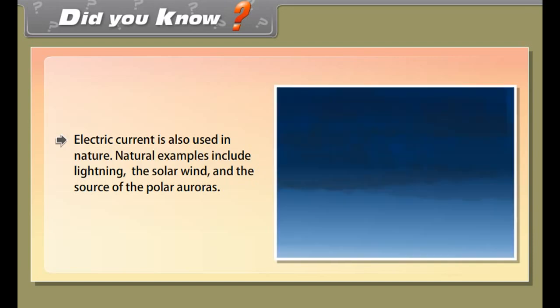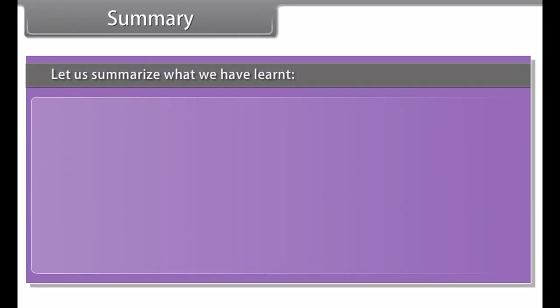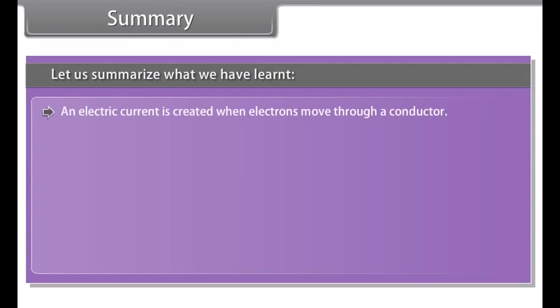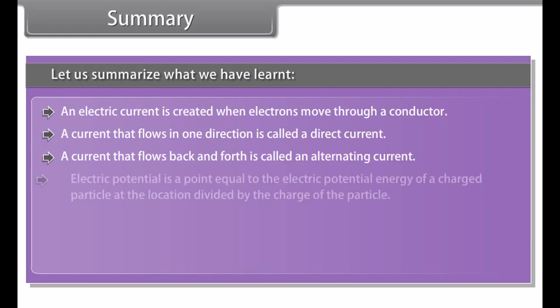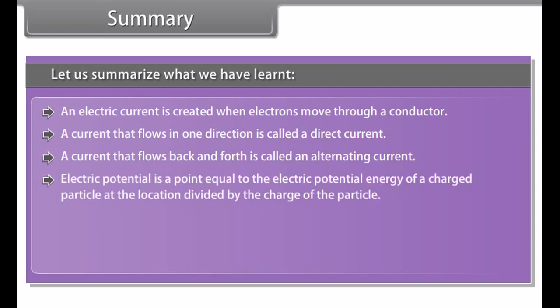The heating effect of electric current is applied in many appliances, including electric immersion water heaters and electric iron boxes. A good heating element has high resistivity and a high melting point. An electric fuse is an example of the heating effect of electric current — a fuse rated 3A means the maximum current it can sustain is 3A.